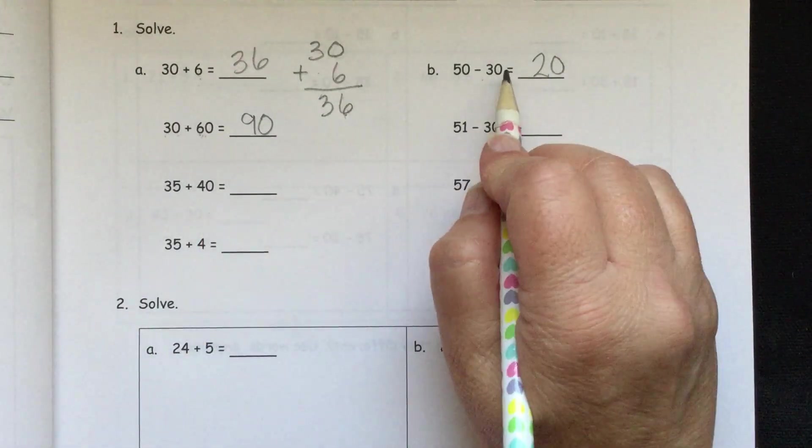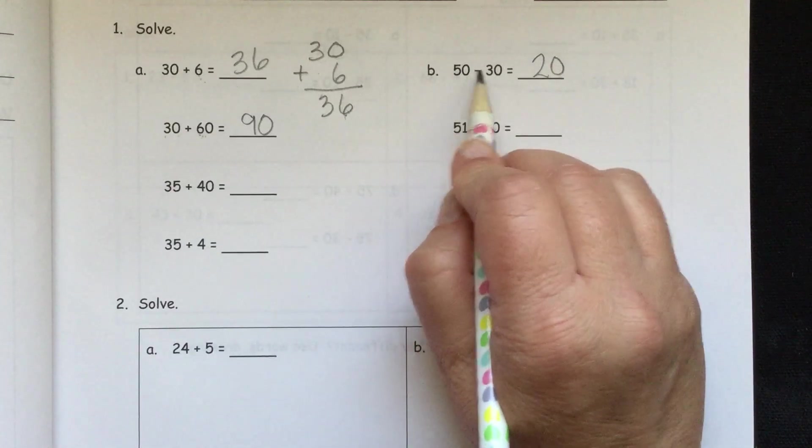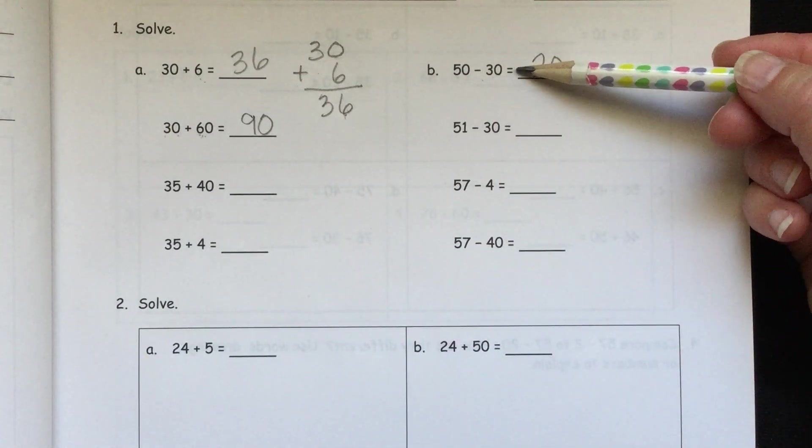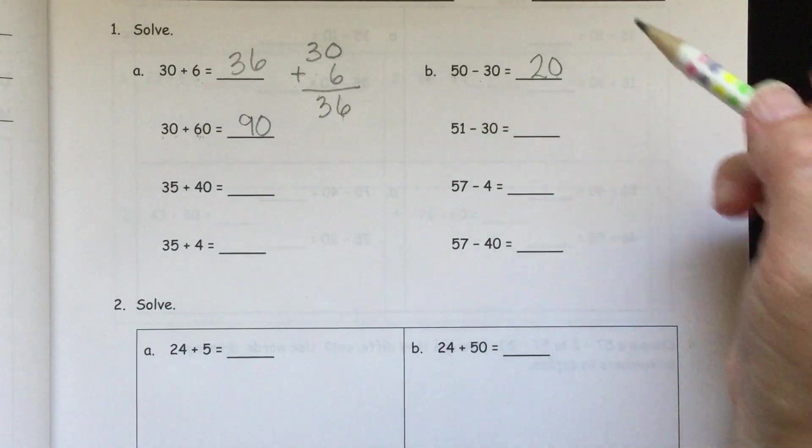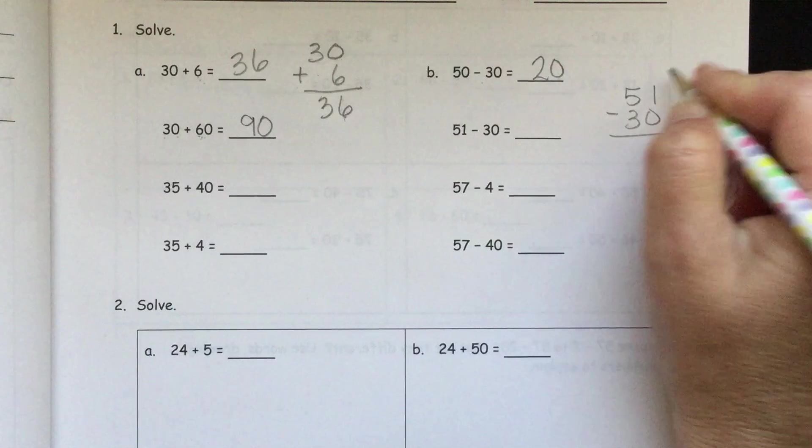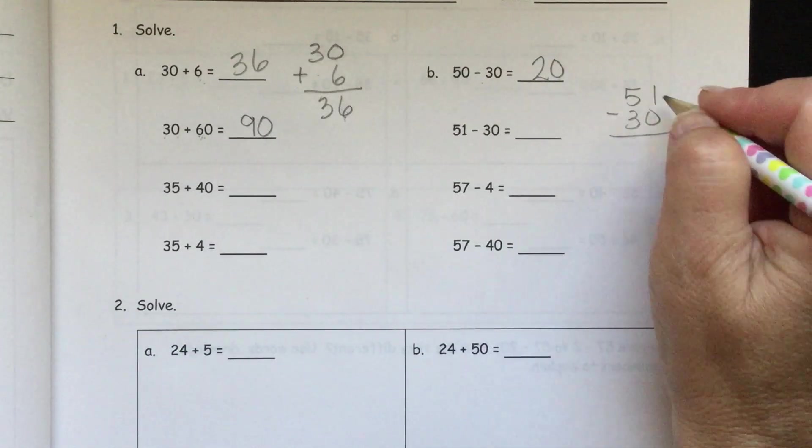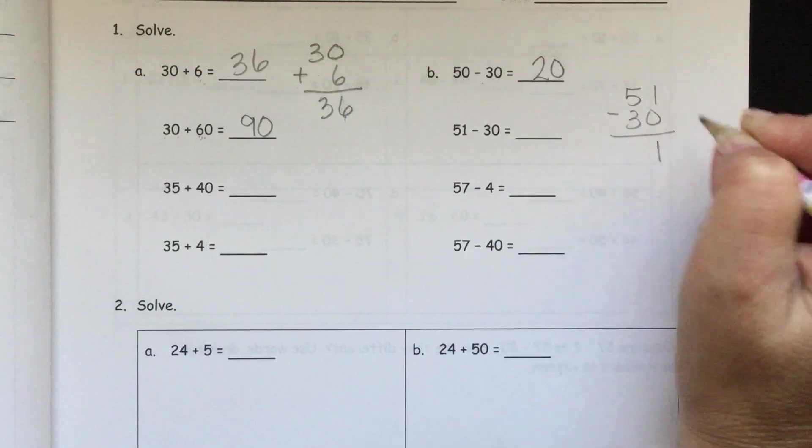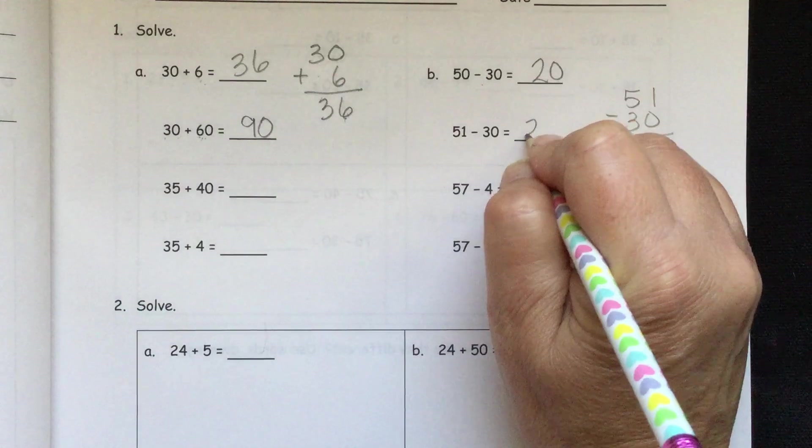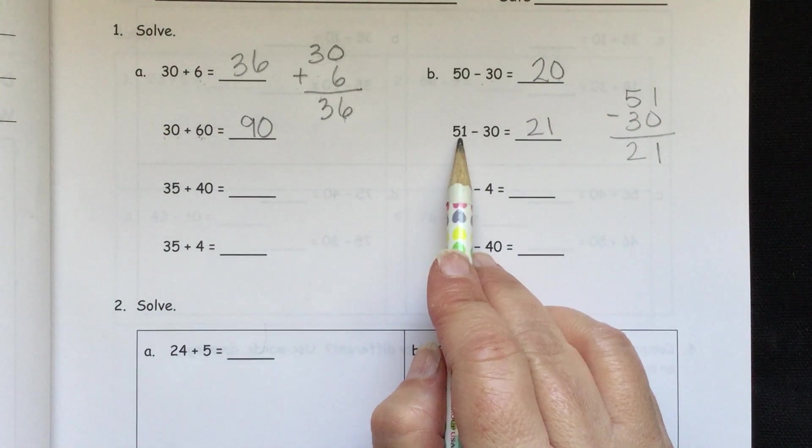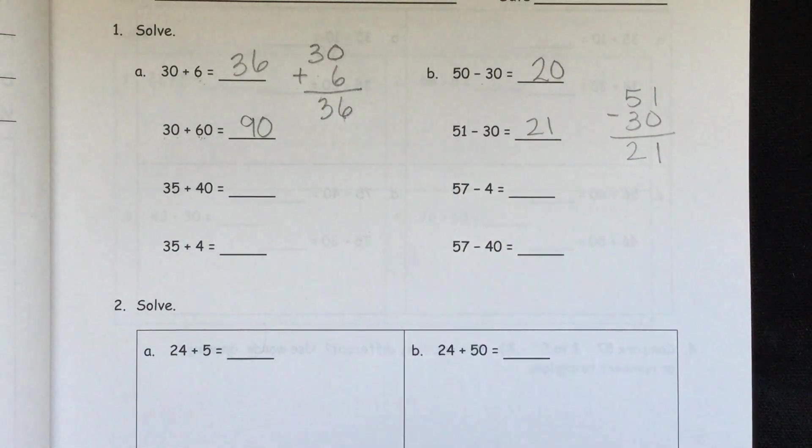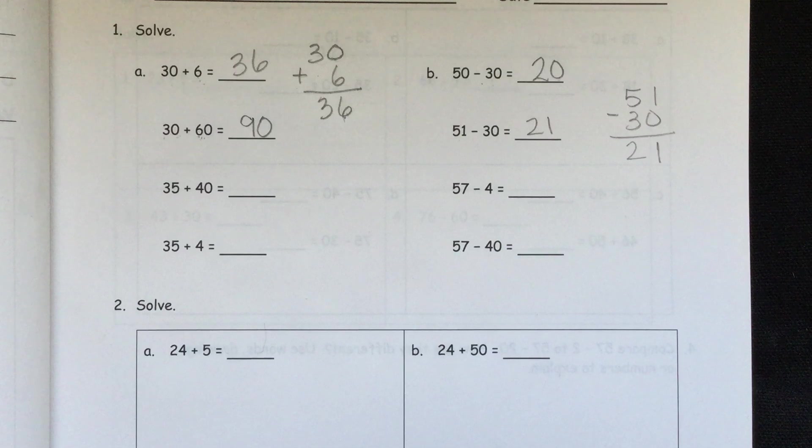Or you could do like we did over here with the 0 minus 0 equals 0 and 5 minus 3 equals 2. Now they changed it a little bit here. We had 50 minus 30 here. And now we have 51 minus 30 here. So we could subtract that vertically, making sure we line up our 1s and our 10s neatly. So we could do 1 minus 0 is 1 and 5 minus 3 is 2. Or you could also think about it. This is just one more than the 50 up there. And we have the same number as what we're subtracting. So we're going to have 21 there. And then you can try these on your own.